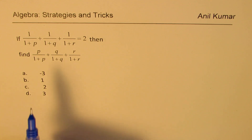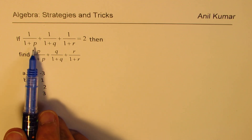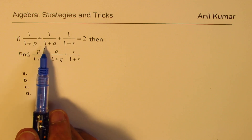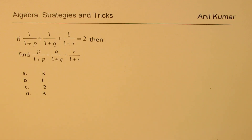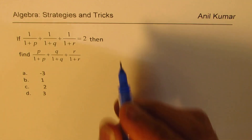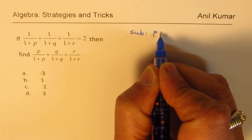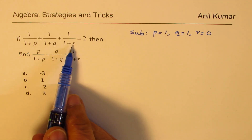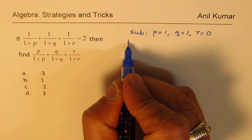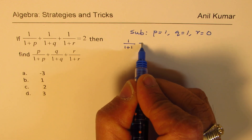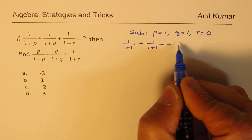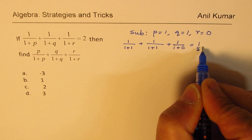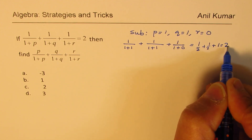Substitution means if I substitute P as 1, Q as 1, and R as 0, then for the given condition I get 1 over (1+1), which is half, plus 1 over (1+1), which is half, plus 1 over (1+0), which is 1. That gives half plus half plus 1, which equals 2. So that satisfies the equation perfectly.